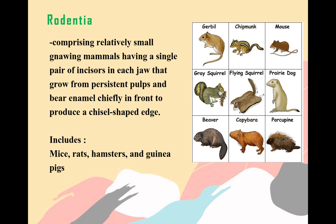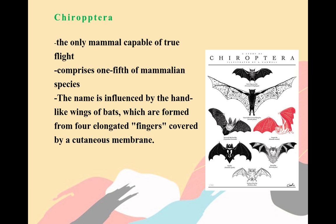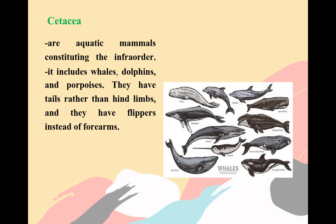Rodentia comprises relatively small gnawing mammals having a single pair of incisors in each jaw that grow from persistent pulps and bear enamel chiefly in front. Chiroptera is the only mammal capable of true flight and comprises one-fifth of mammalian species. The name is influenced by the hand-like wings of bats, which are formed from four elongated fingers covered by a continuous membrane. Cetacea are aquatic mammals; they include whales, dolphins, and porpoises. They have tail flukes rather than hind limbs, and flippers instead of forearms.